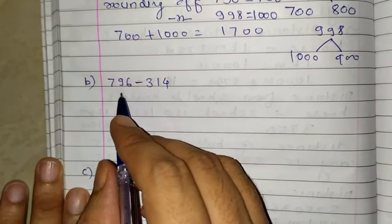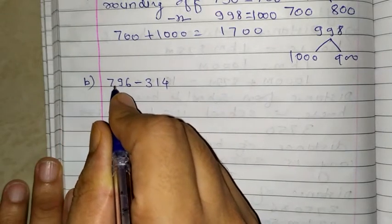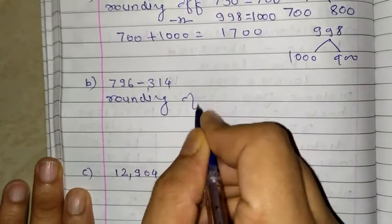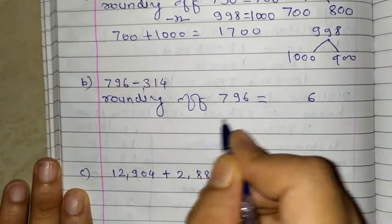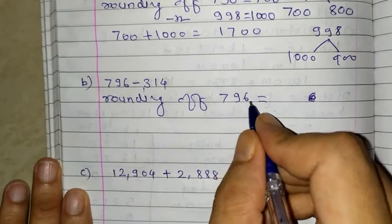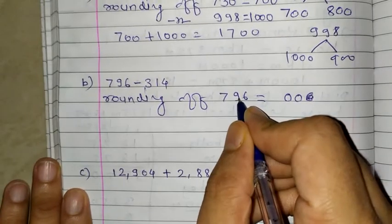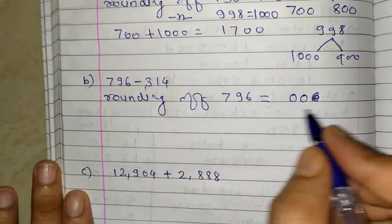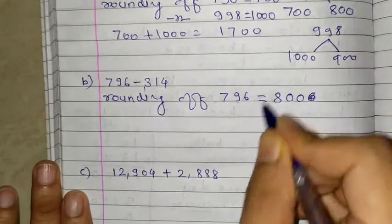Next one is 796 minus 314. Now we will solve in another way. If you make it round off, rounding of 796 is nothing but, if you see this number 796, it is closer to 800. If you convert into nearest 100, then what happens here is 00 as it is, 9 is there, so you do plus 1. So it is 800.